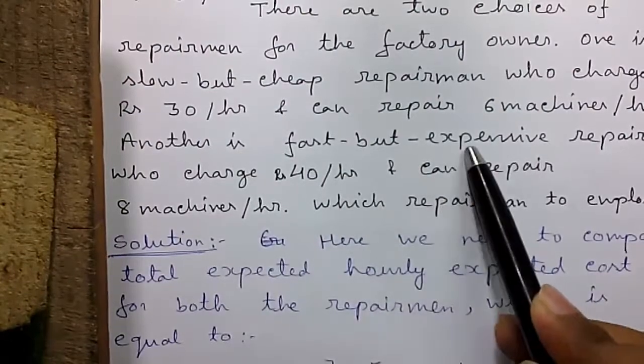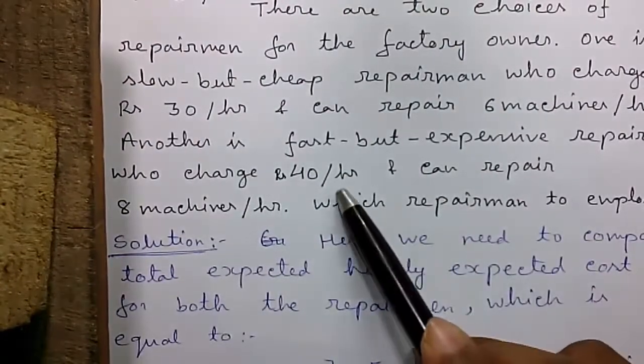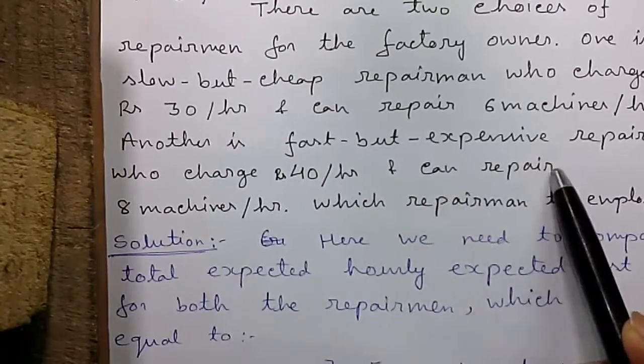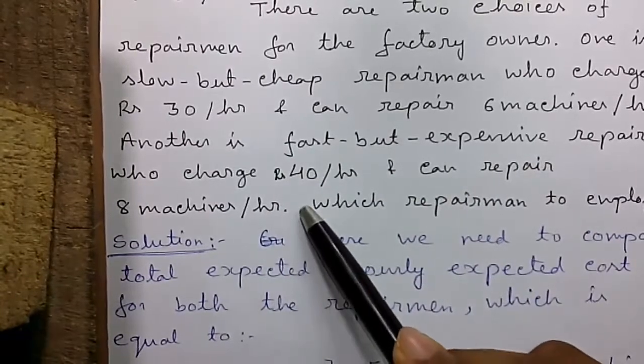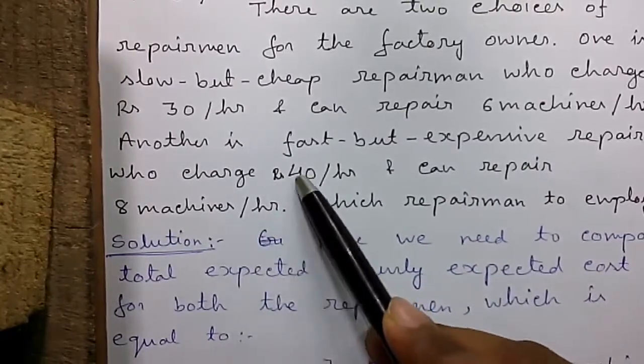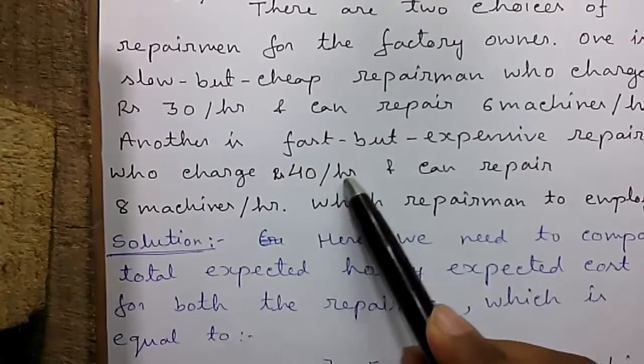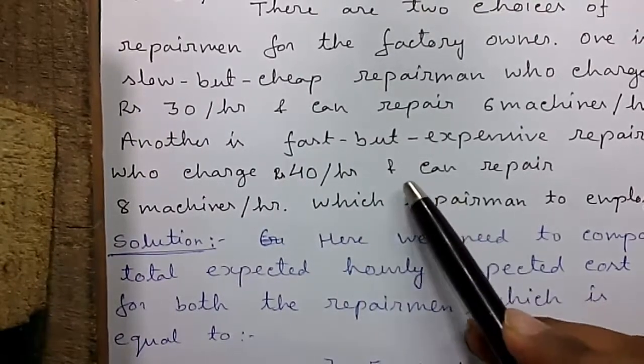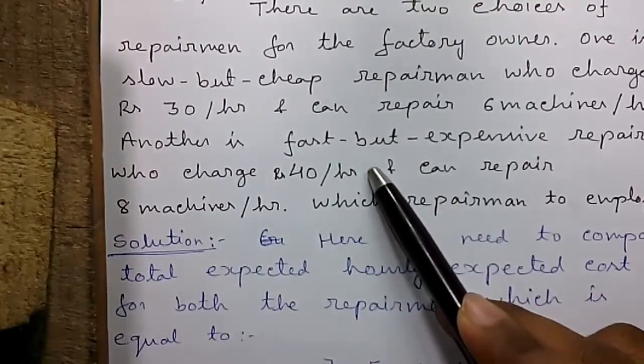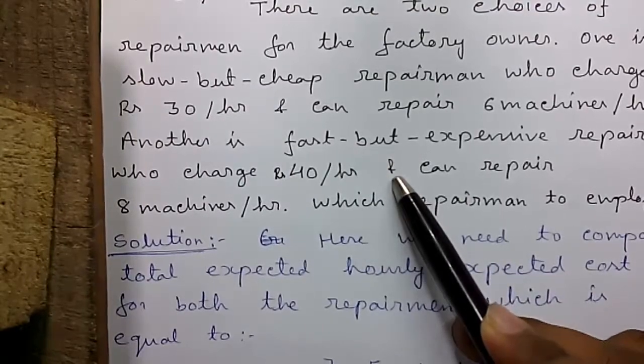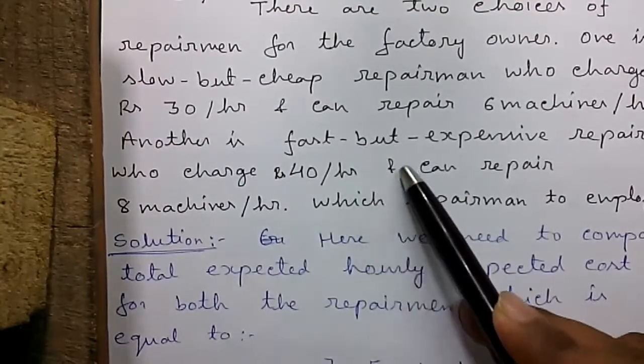Another is fast but expensive repairmen who charge Rs 40 per hour and can repair 8 machines per hour. Again the charge is 40 divided by 8, 5 per machine. So we can't directly decide from the question which will cost less. So we have to do the calculation using queuing theory.